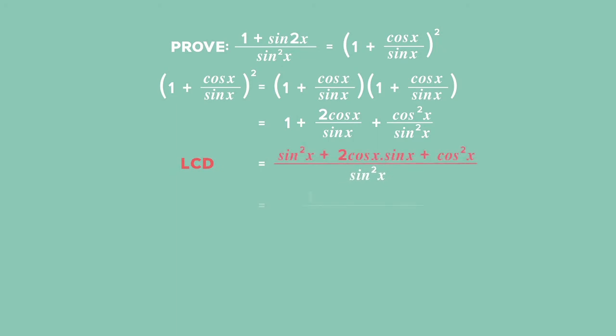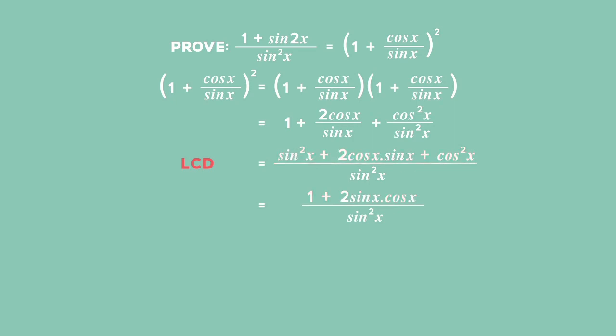In the numerator, you see the expansion of the sin double angle. Hence, you can rewrite 2 sin x times cos x as sin 2x, so the numerator simplifies to 1 plus sin 2x and that's all over sin squared x.